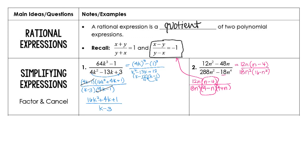So we'll be able to cancel those. Keep in mind when you're canceling, those are ones that are left — in this case, it's a negative one that's left. A 6 will come out of both 12 and 18, so I have 2 and 3. Subtracting our n exponents, there's an n left. So the final answer is going to be negative 2 over 3n times the quantity 4 plus n.